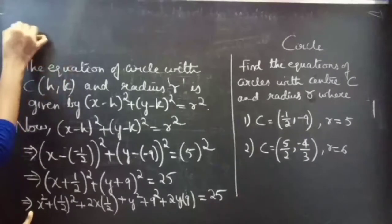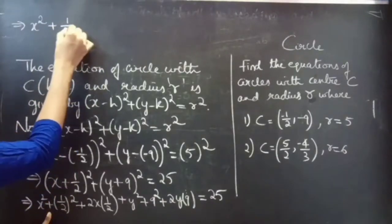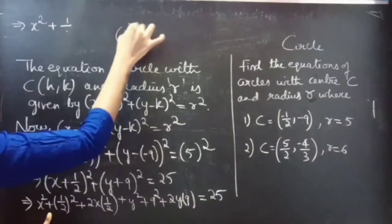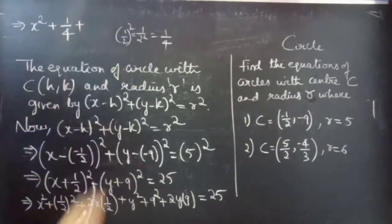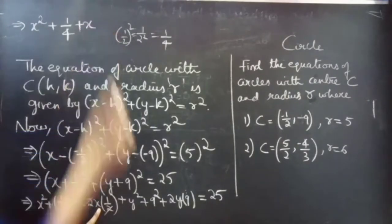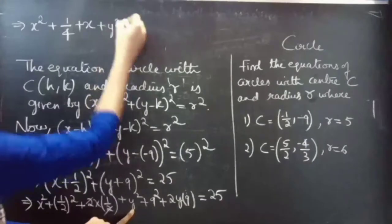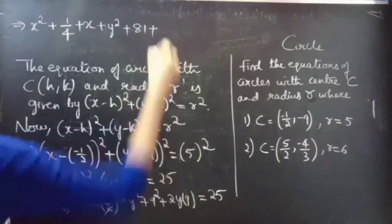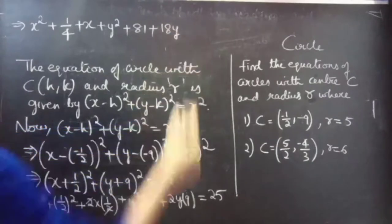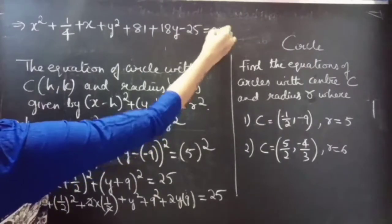Expanding: x² + (1/2)² + 2·x·(1/2) — the 2 cancels — giving x² + 1/4 + x. Then y² + 9² + 2·9·y = y² + 81 + 18y. This all equals 25. Now take 25 to the left-hand side, giving minus 25 equals 0.